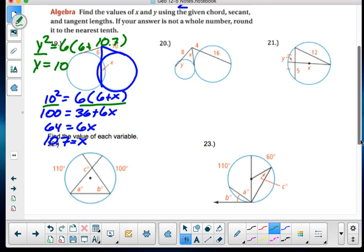Our next one, in 20, I'm looking at this idea that this outside, 4 times 20, because that's the entire length, is equal to x squared. Well, this is 80 is equal to x squared, and the square root of 80 is 8.9. So x is 8.9.